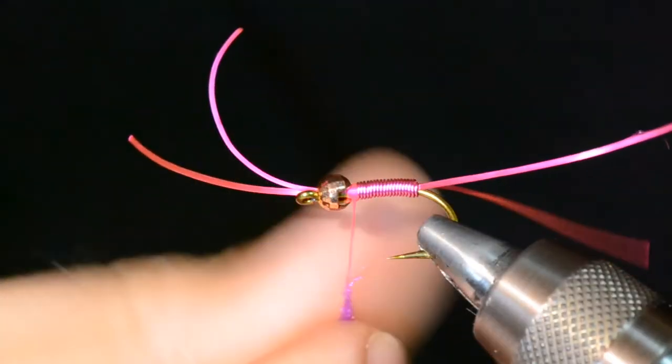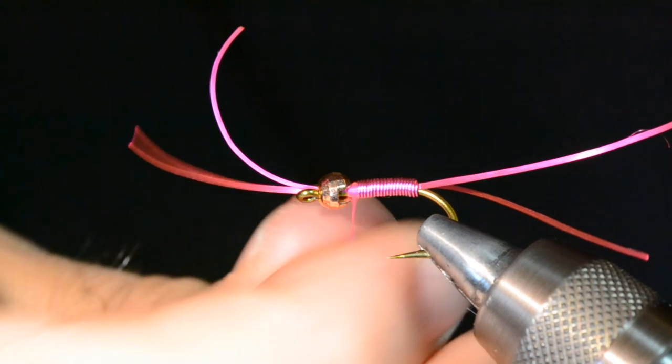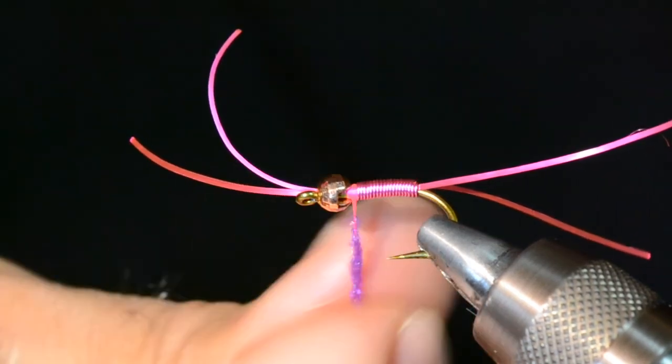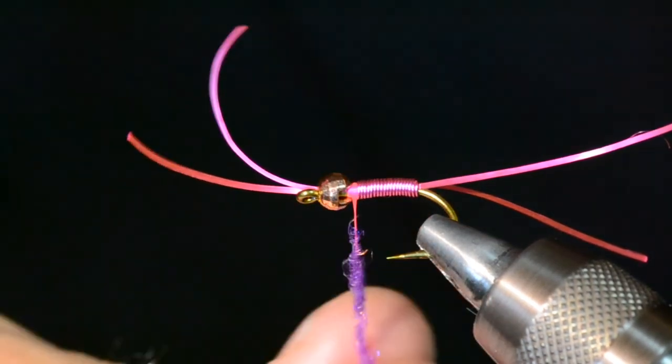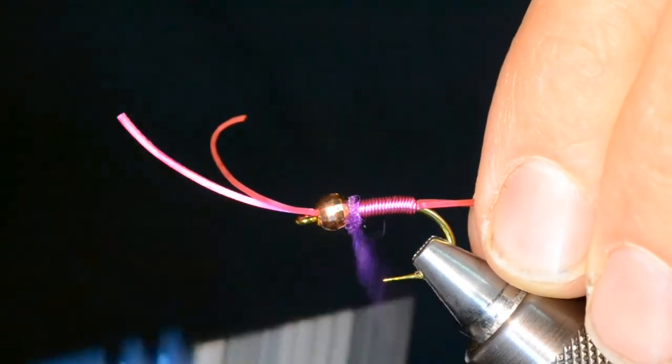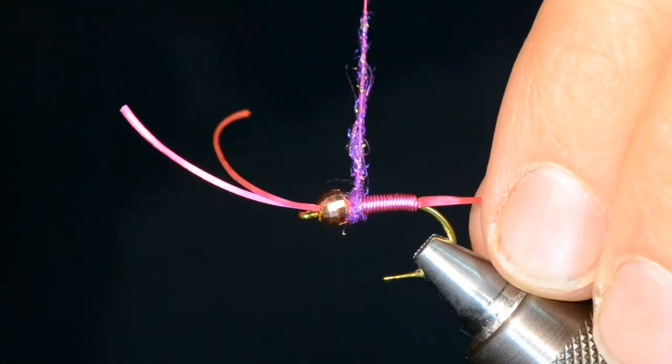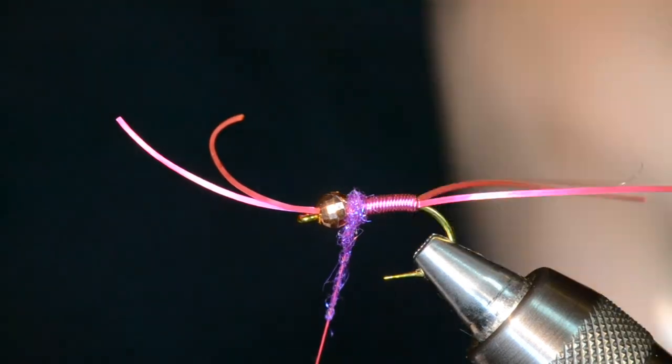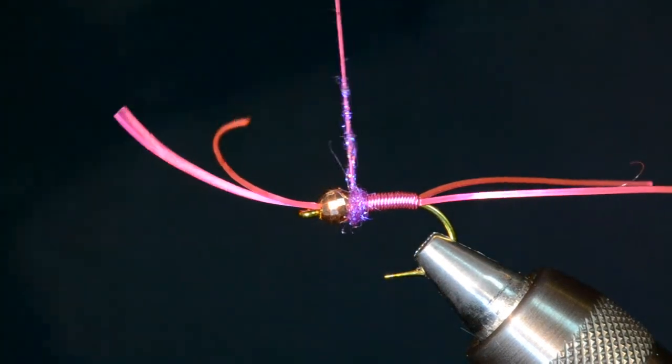If you're doing something with more dubbing, this is kind of a poor example for that, but you get the idea. It's okay if you make a wrap or two back that kind of goes over the pink wire. That's pretty good right there. I like what I've got going on.